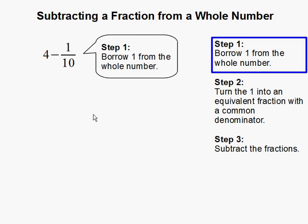Step 1: Borrow 1 from the whole number. So we're going to borrow 1 from 4. So 4 becomes 3 plus 1, and that's where the 1 is being borrowed from.